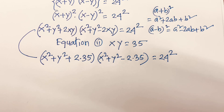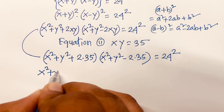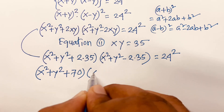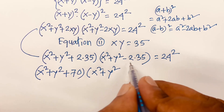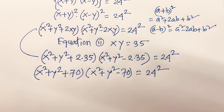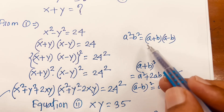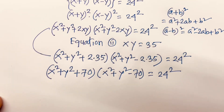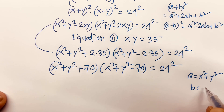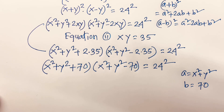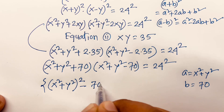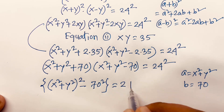So I can say (x² + y² + 70)(x² + y² - 70) equals 24 squared. We know that a² - b² equals (a + b)(a - b). If we let a equal x² + y² and b equal 70, then (x² + y²)² - 70² equals 24 squared.